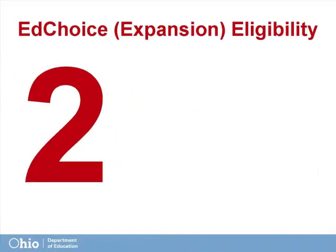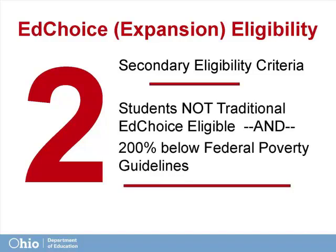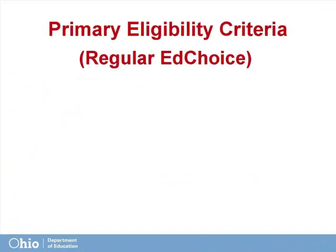However, later legislation created the EdChoice Expansion Scholarship Program that has a secondary eligibility criteria — specifically for students who are not traditional EdChoice eligible, but whose family income is at or below 200% of the Federal Poverty Guidelines.